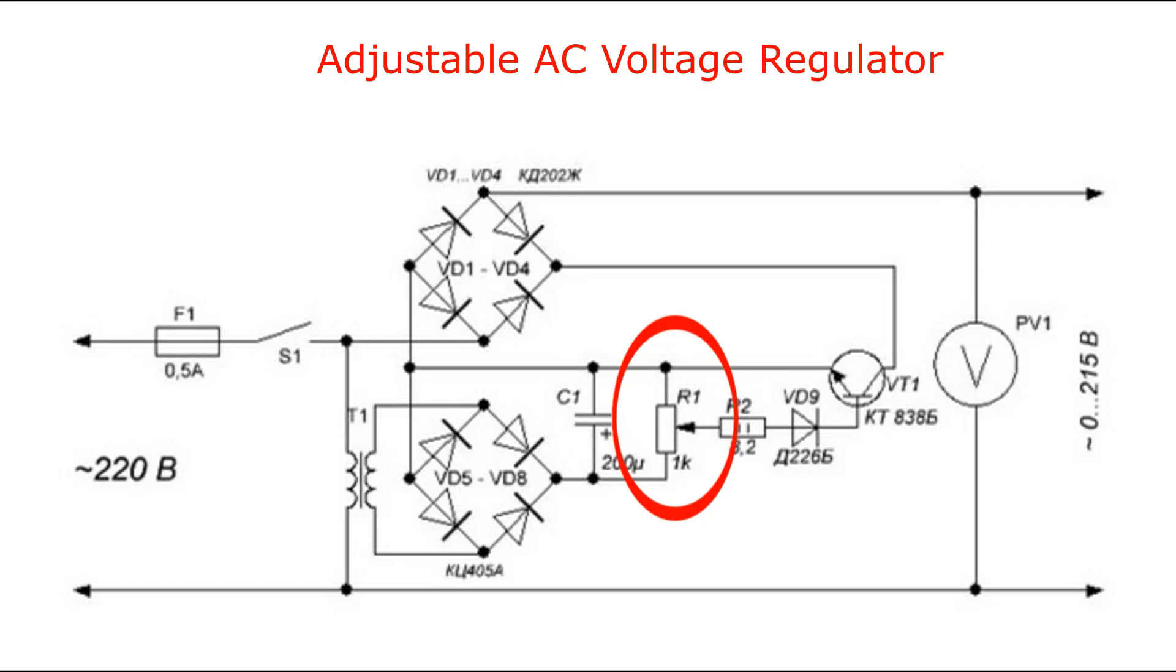DC voltage is supplied to resistor R1 from a step-down transformer through a rectifier made of diodes from D5 to D8 and smoothed by capacitor C1. Diodes D1 through D4 must be high power with a reverse voltage of at least 400 V.